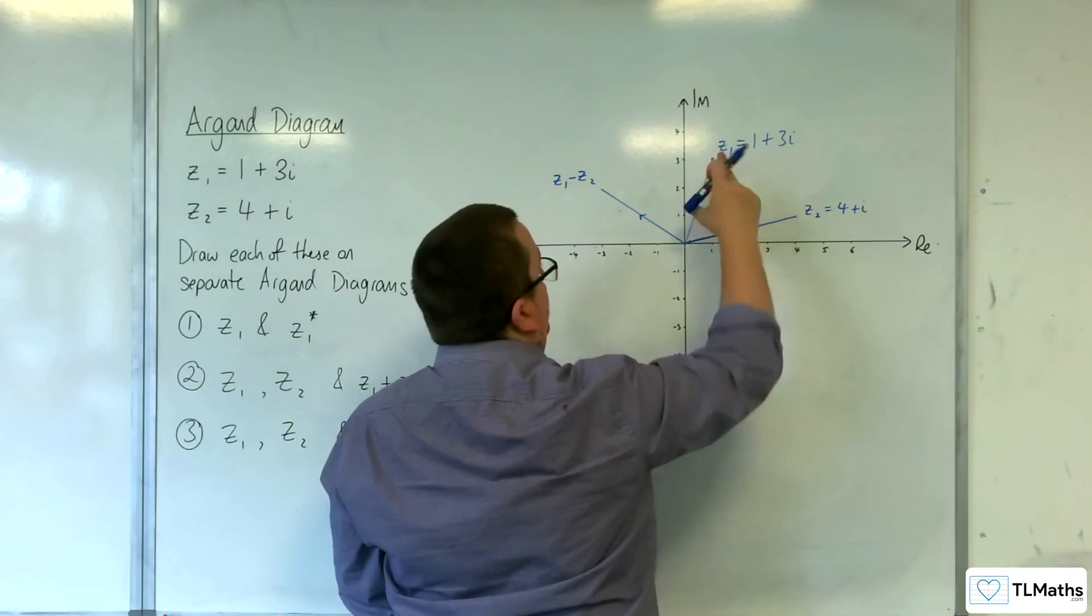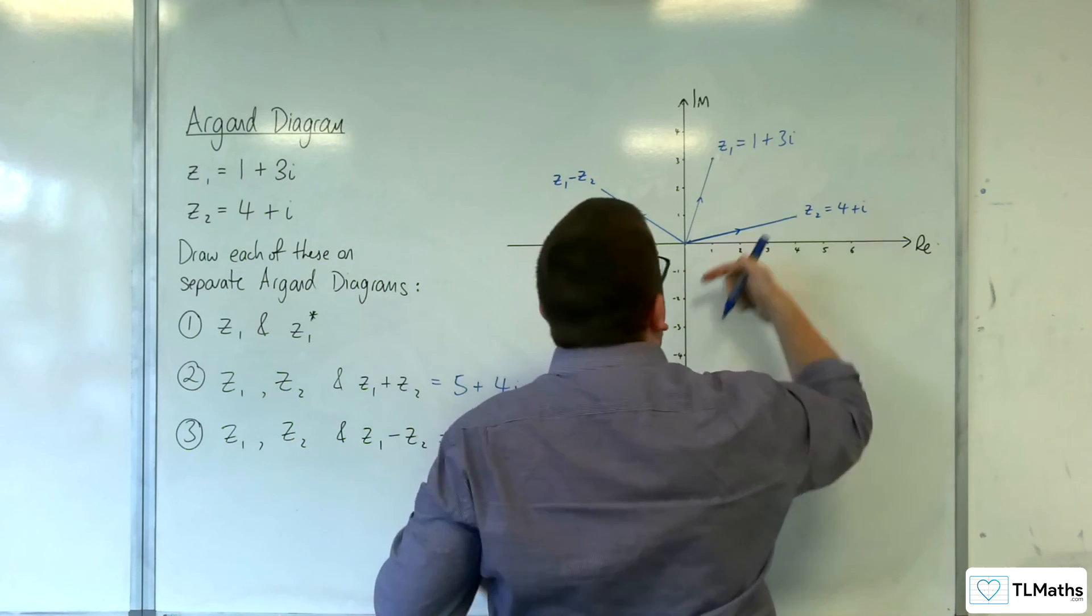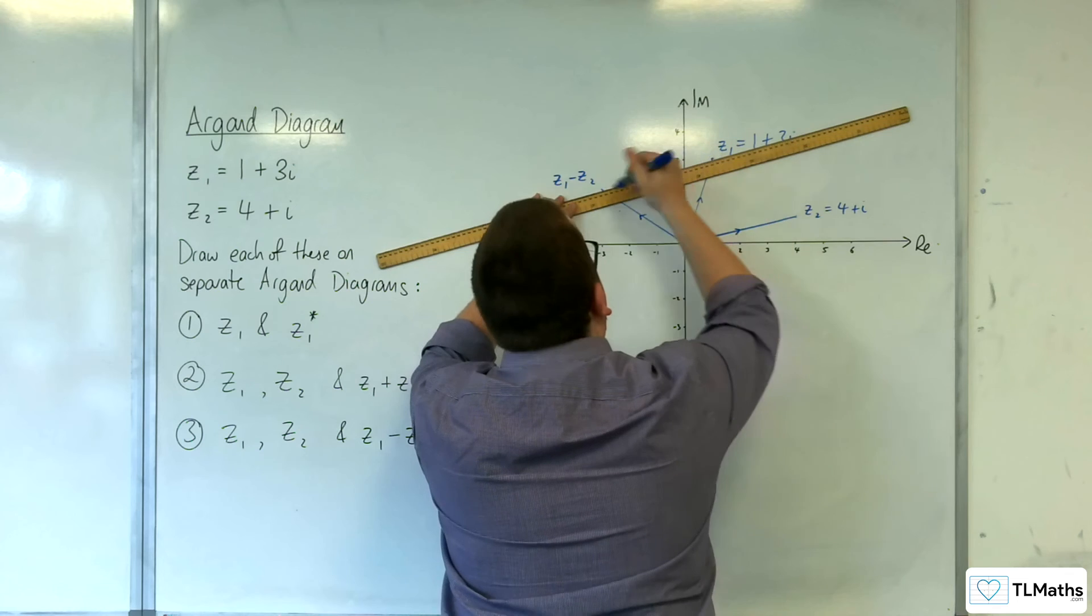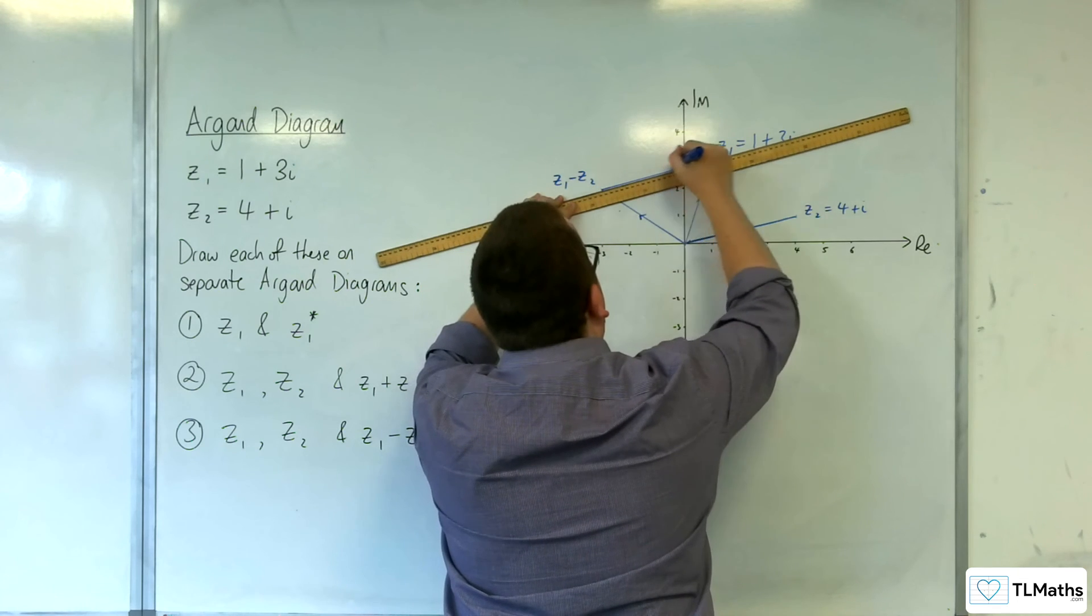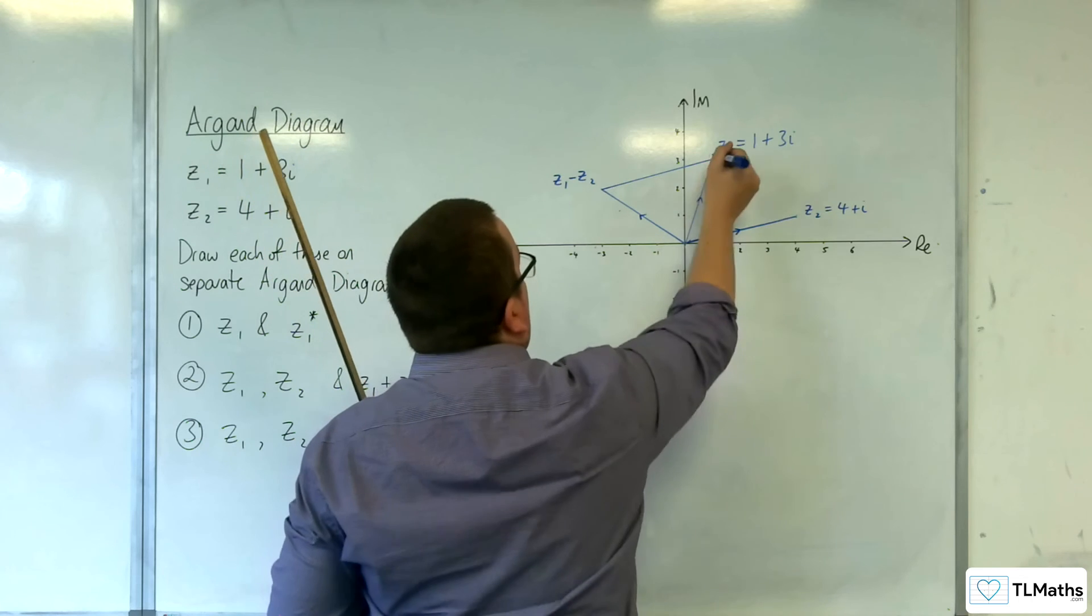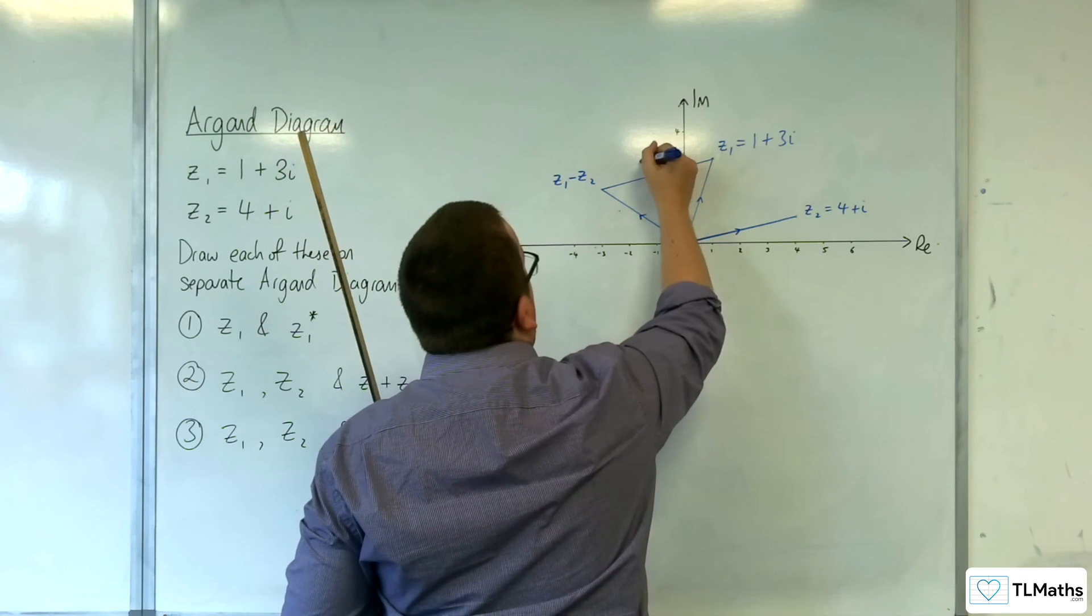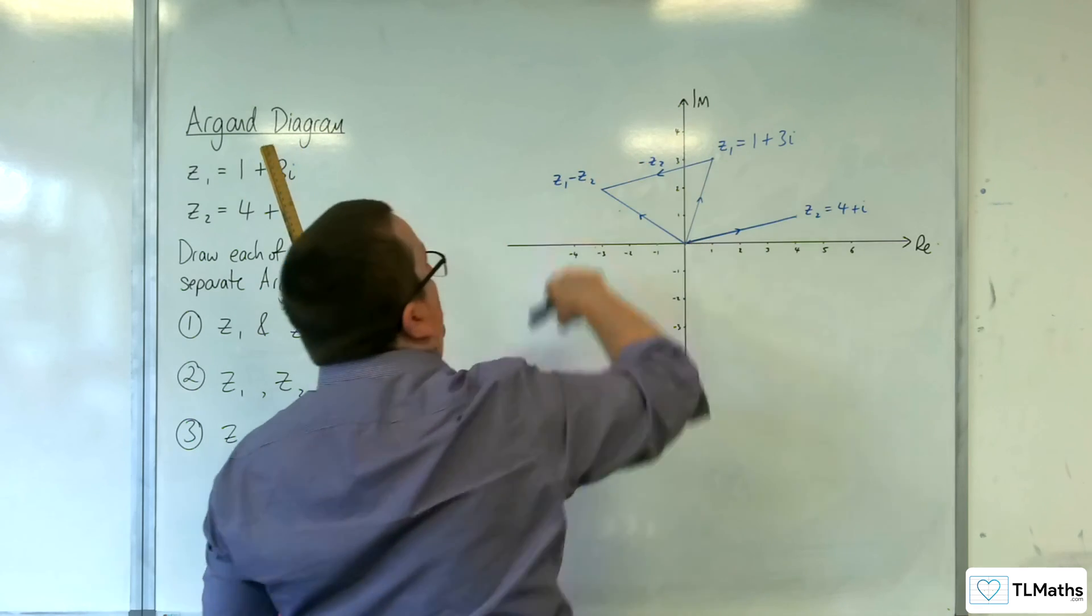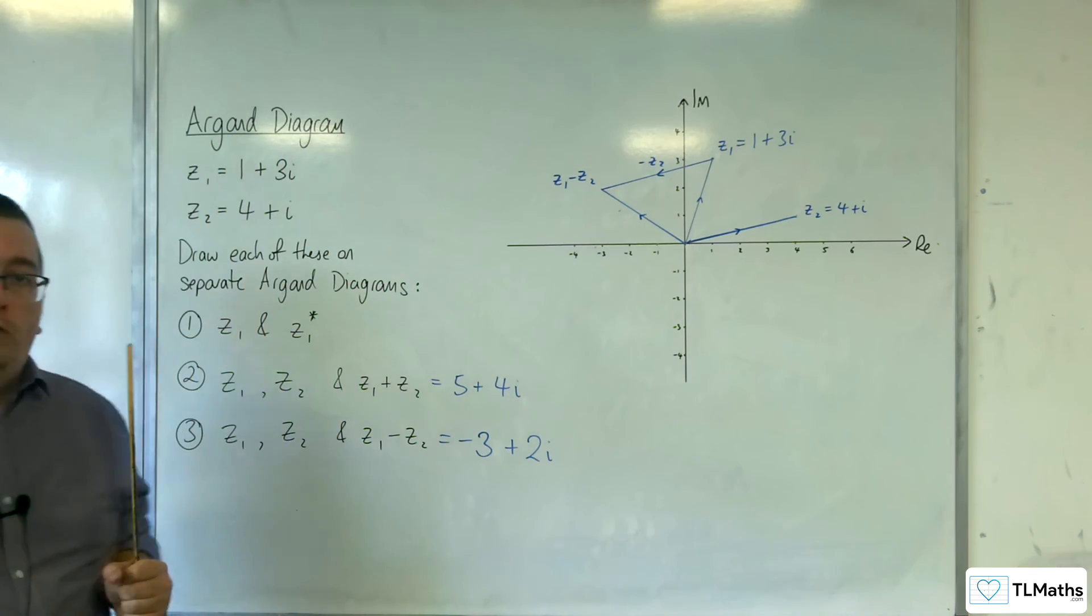Well, there's your Z1 and you're taking away Z2. So, you're going back on yourself. So, from there to there. From there to there is Z2. From there to there is minus Z2.